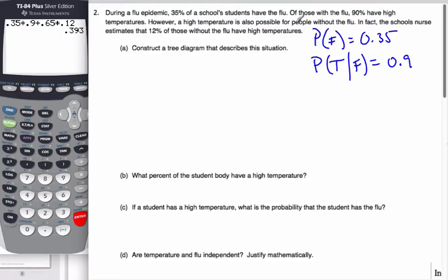However, high temperature is also possible for people without the flu. In fact, the school's nurse estimates 12% without the flu have high temperatures. So the probability of having a temperature but you do not have the flu is 0.12. And so these are the probabilities that we are given.